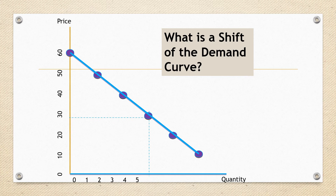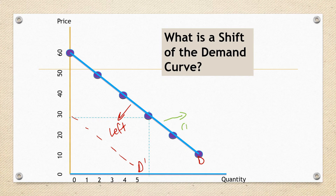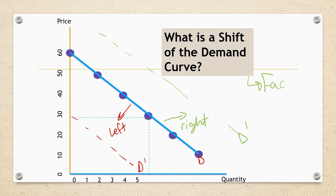Now let us explain what a shift of the demand curve is. When explaining a shift, my demand curve is either shifting to the left — inward — meaning demand is decreasing, or shifting to the right, meaning demand increased. A new demand curve — shown in green — shifted to the right indicates an increase in demand. What causes the demand curve to shift left or right is the factors of demand, which I call demand shifters.